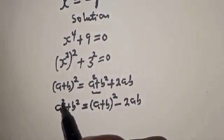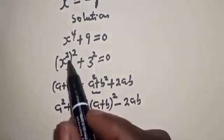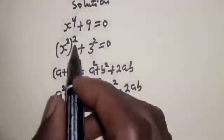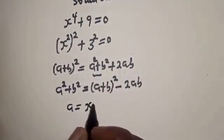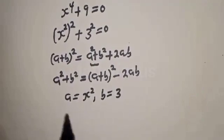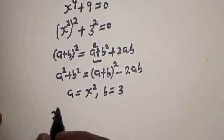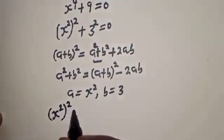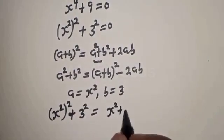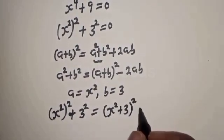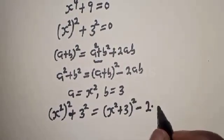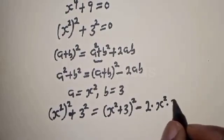If you compare this: here a² corresponds to x-squared squared, and b² corresponds to 3-squared. So a is equal to x-squared and b is equal to 3. Therefore, x-squared squared plus 3-squared equals (x-squared plus 3)² minus 2 times x-squared times 3.